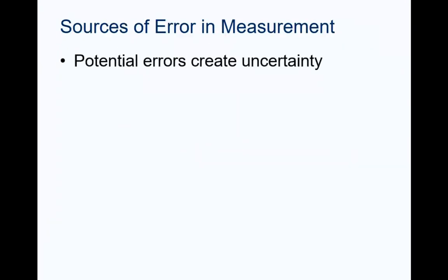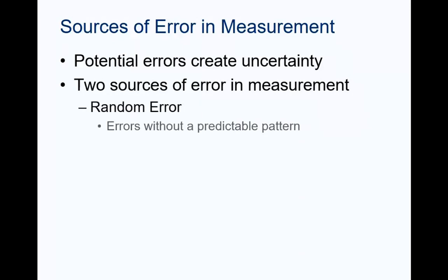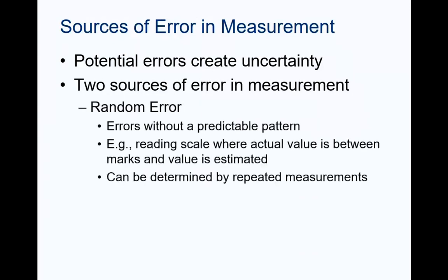Potential error in measurement creates uncertainty. There are two types of errors that can occur in measurement. Random errors are typically associated with the measuring equipment or the person performing the measurement. For example, when measuring the volume of a liquid in a graduated cylinder, the measurement value may fall between two graduations on the cylinder. The reader must estimate the value, which may sometimes be too large or too small. Random errors can be identified by repeating the same measurement.